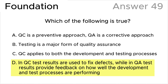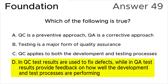The correct answer is D. In QC, test results are used to fix defects. While in QA, test results provide feedback on how well the development and test processes are performing. This answer is based on the ISTQB syllabus. Although the correct answer is based entirely on the syllabus, let's break down all the wrong answers through theory.